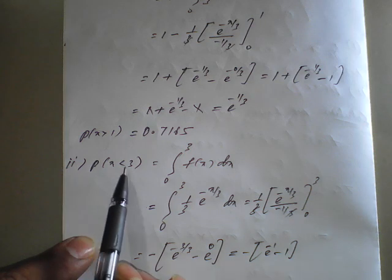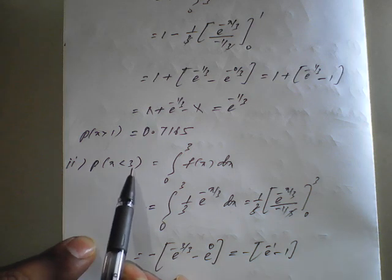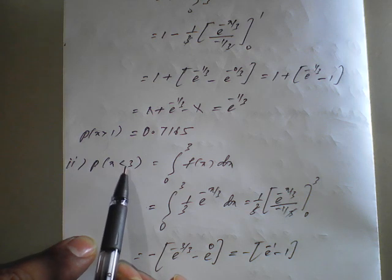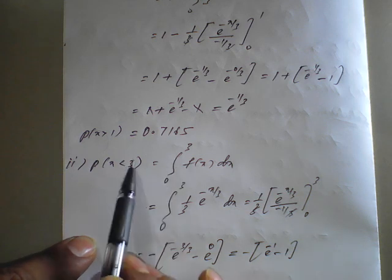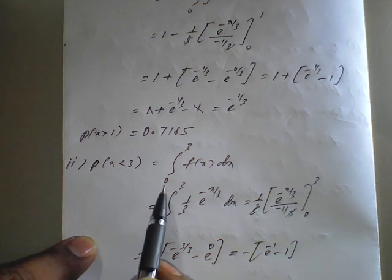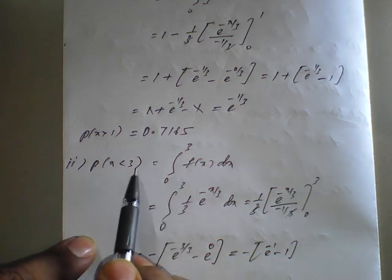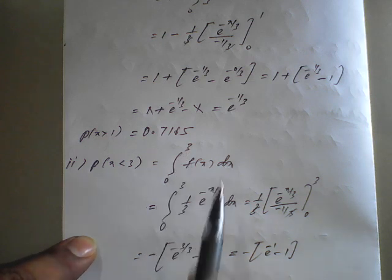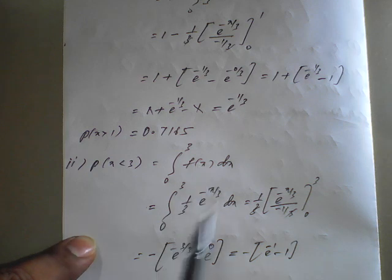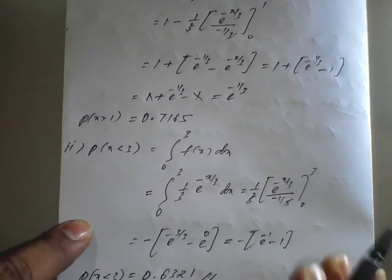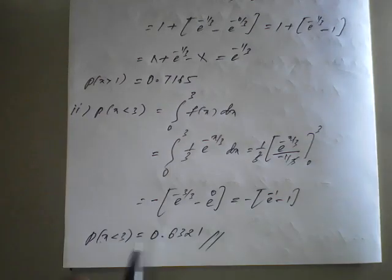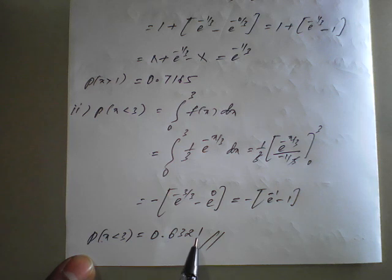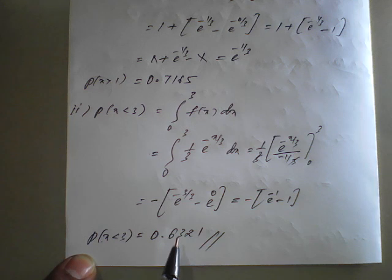For the second part, P(X < 3): we integrate from 0 to 3 of f(x) dx, which is the integral from 0 to 3 of (1/3) e^(minus x/3) dx. On simplification applying upper and lower limits, we get the answer 0.6321. In this way we simplify problems of exponential distribution.